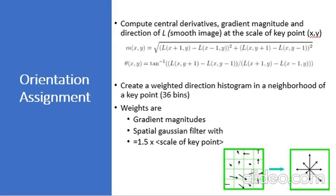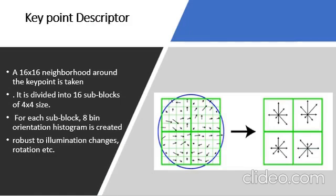Key point descriptor: now a key point descriptor is created. A 16×16 neighborhood around the key point is taken and divided into 16 sub-blocks of 4×4 size. For each sub-block, an 8-bin orientation histogram is created, so a total of 128 bin values are available. It is represented as a vector to form the key point descriptor. In addition, several measures are taken to achieve robustness against illumination changes and rotation.